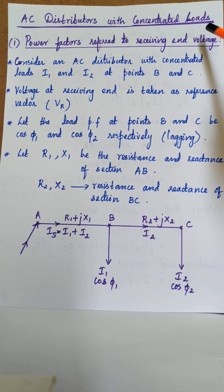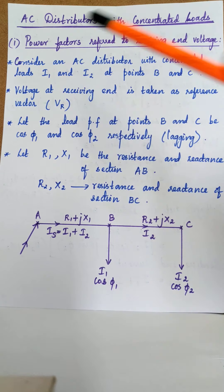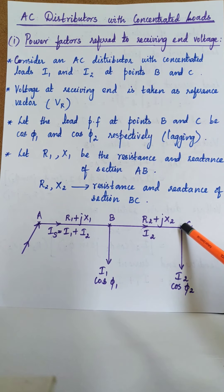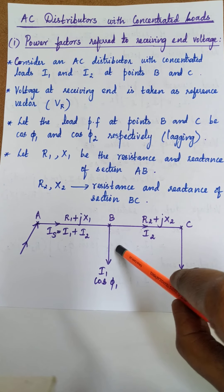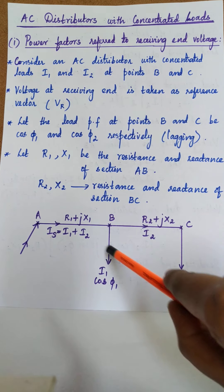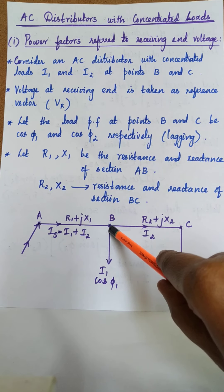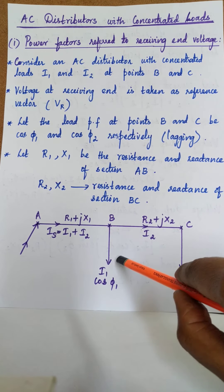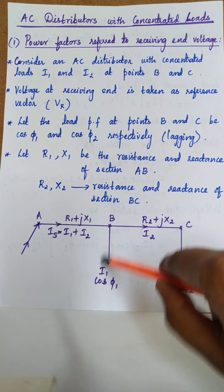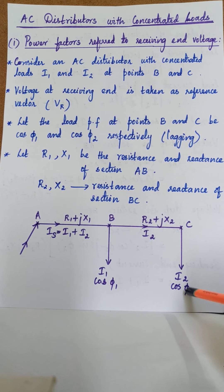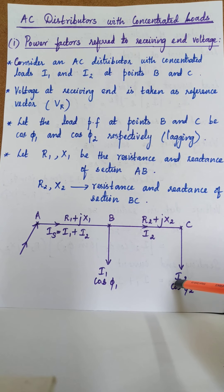The receiving end voltage is taken as a reference, and with respect to the receiving end reference, we are considering the power factor of the load. Let us consider an AC distributor AC. We consider two concentrated loads tapped from point B and point C respectively. Let I1 be the load current at point B and let I2 be the load current at point C. Let the load power factors at point B be cos phi 1 and at point C be cos phi 2. These cos phi 1 and cos phi 2 are taken with respect to the reference vector which is the receiving end voltage Vr.